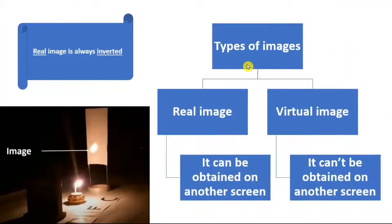Here we have the types of images. Different types of mirrors form different types of images - we have real image and virtual image. What is the difference between these two is that the real image can be obtained on another screen. The image is reflected on the mirror and then that can be transformed to some other screen.